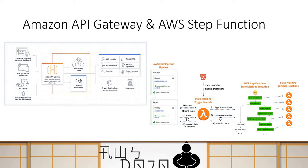That was a quick introduction of these two services. But today, I really want to focus on how you can call an API Gateway-based API from a state machine workflow created inside AWS Step Function.